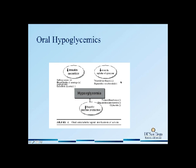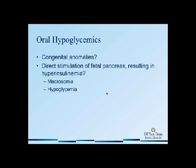The main concern with using oral hypoglycemics in pregnancy was the concern for congenital anomalies. There were some studies initially performed with sulfonylureas — the first generation — in the 70s and 80s that raised concern for congenital anomalies. However, these older studies did not control for hemoglobin A1c. As you know, the higher the hemoglobin A1c, the higher the risk of congenital anomalies. So these studies were poorly designed, and that's why we do not use sulfonylureas in the first trimester.